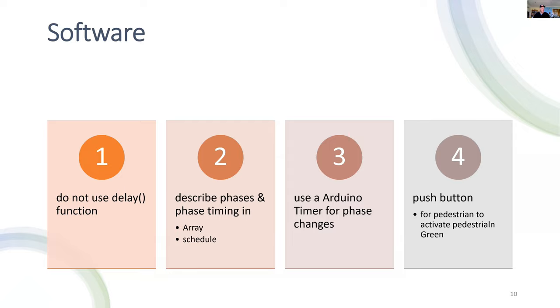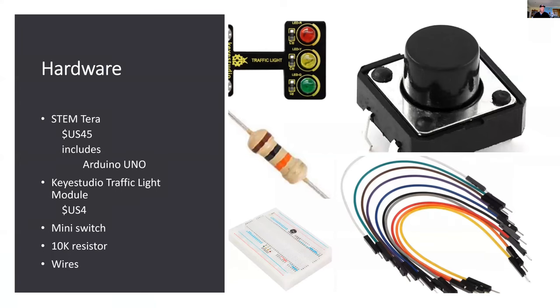In addition to those objectives, I want to minimize the use of code which is wasteful on time. The delay function is an example of that, so I'm going to use something other than delay. I also want to describe the phases and phase timing in an array and schedule each of the phases. I'm going to use an Arduino timer for those phase changes. For the push button, when the pedestrian presses and activates the green, I need to also implement that with software.